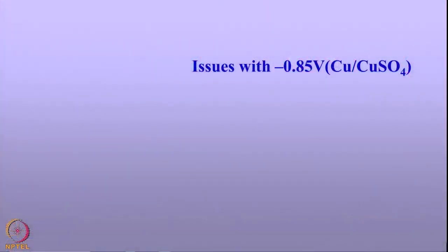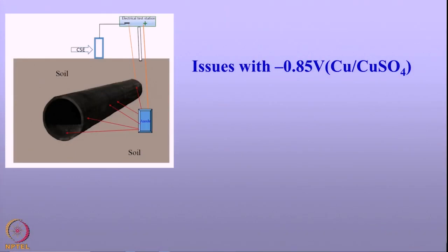Let us look at the merits and demerits of each criterion. The first criterion is minus 0.85 volt pipe-to-soil potential measured with respect to the copper/copper sulfate electrode. This criterion is a simple method, very versatile, and you can measure the potential at any time — in fact, it can be measured online. However, the main problem arises from the fact that the measured potential may not actually correspond to the true polarized potential of the pipeline.